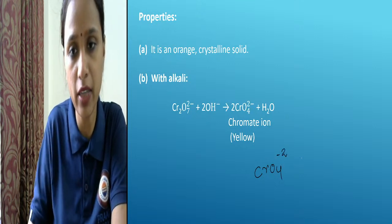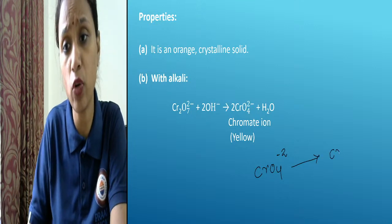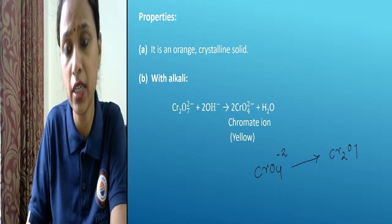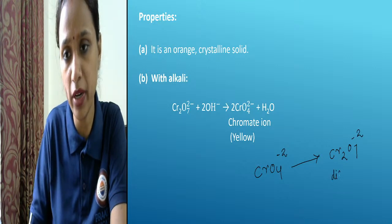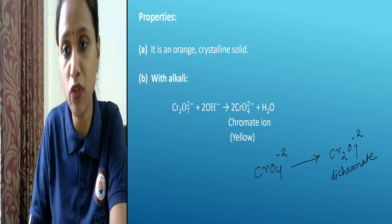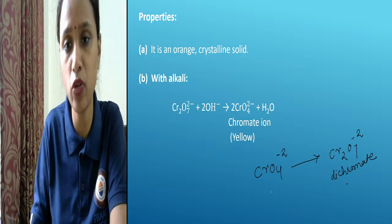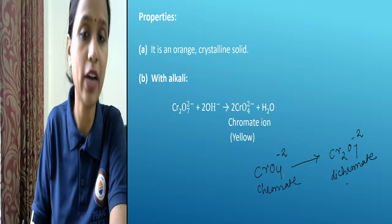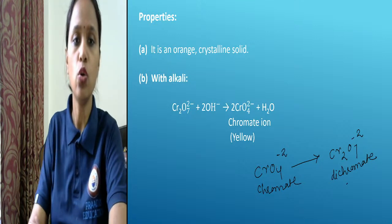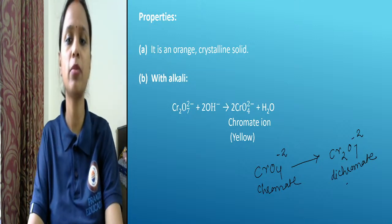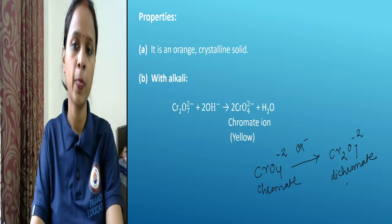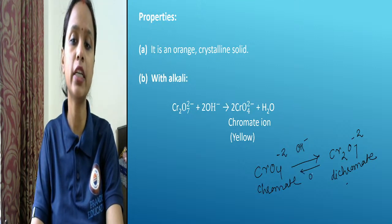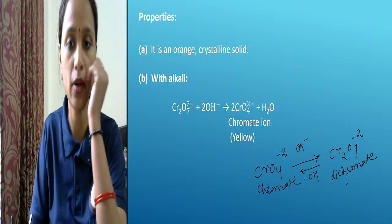Chromate is CrO₄²⁻ and dichromate is Cr₂O₇²⁻. If you remember these two structures in ionic form, the reaction becomes very easy. Chromate converts to dichromate when treated with acid; dichromate converts to chromate when treated with base. This is a reversible reaction.